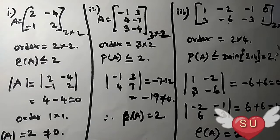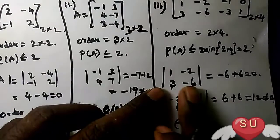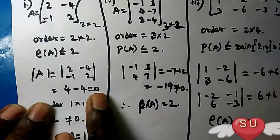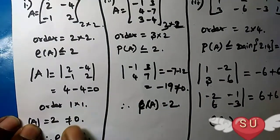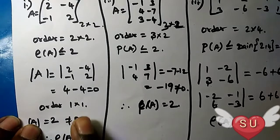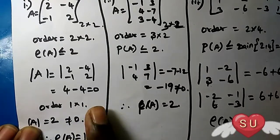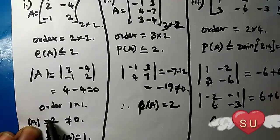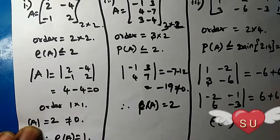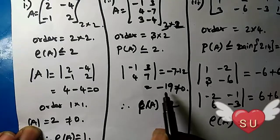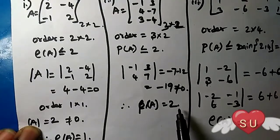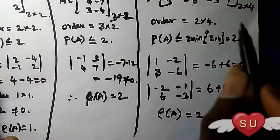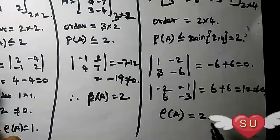So this is 2 into 2. If you want to see the two equals zero, then the next one is order 1 into 1. Let's consider order 1 into 1. 1 into 1 is number 1. So 1 is not equal to 0, therefore rank of A — now we have not equal to 0, rank is 2. But next 2 is number 2, so rank of A is number 2.